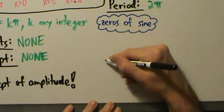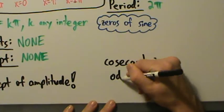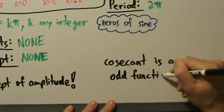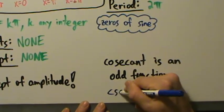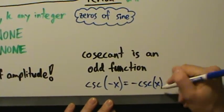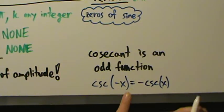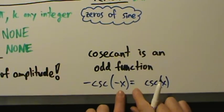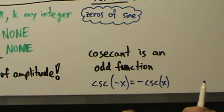The last property: cosecant is an odd function. We've used that property before to evaluate cosecant at various values. What this means algebraically is: cosecant of negative x equals negative cosecant of x. Be careful — it's not factoring; it's just a property of odd functions. Another way to express it is: negative cosecant of negative x equals cosecant of x. Both forms can be useful.